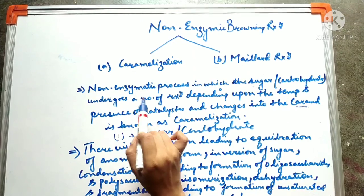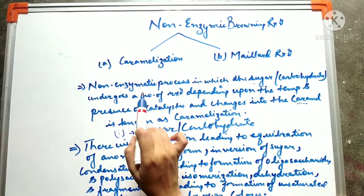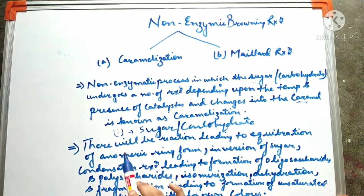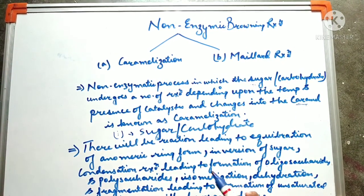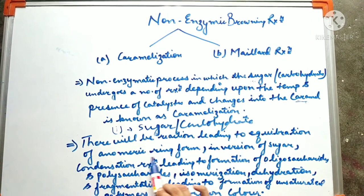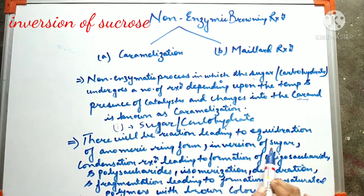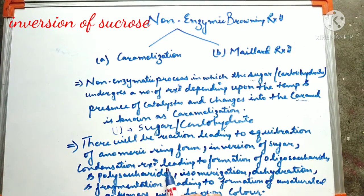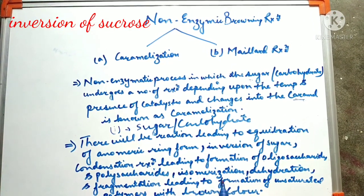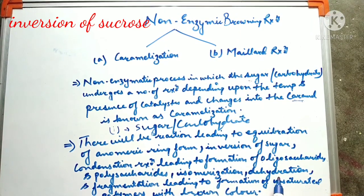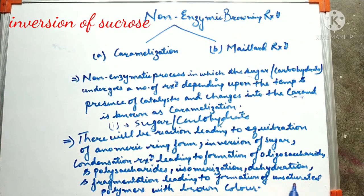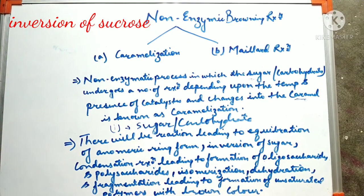As this caramelization process undergoes various reactions, let us learn what kind of reactions take place here. There is a reaction leading to the equilibration of the anomeric ring form, inversion of sugar, condensation reaction leading to the formation of oligosaccharides and polysaccharides, isomerization, dehydration, and fragmentation leading to the formation of unsaturated polymers with brown color.